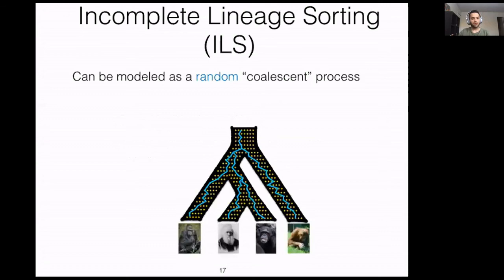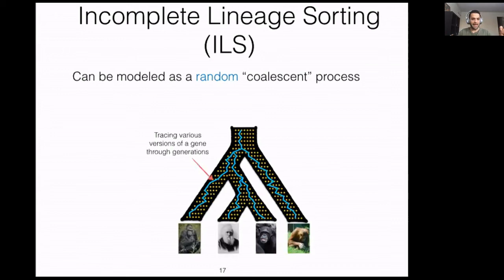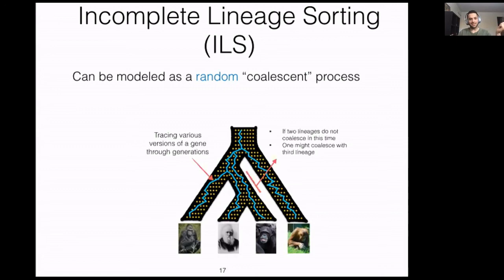What is incomplete lineage sorting? The species tree is shown as a thick black tree, and each dot shows an individual or different version of a gene. You can track lineages through the history, and when two lineages merge together, we say they coalesce. There is a chance they don't coalesce within a given time, and in that case one lineage may coalesce with a sister lineage, ending in discordance between the gene tree and the true species tree. This is called incomplete lineage sorting.